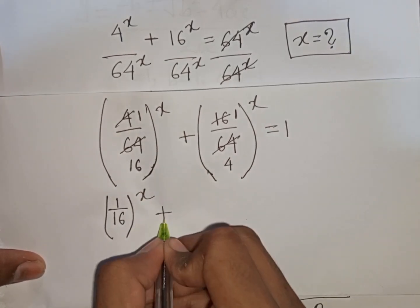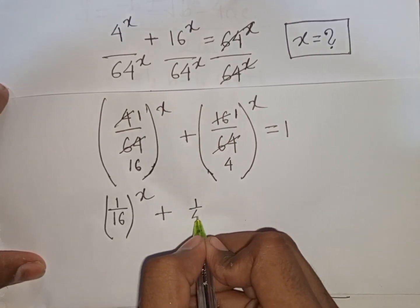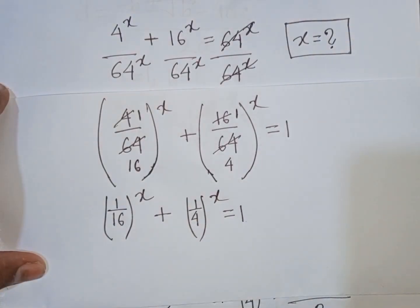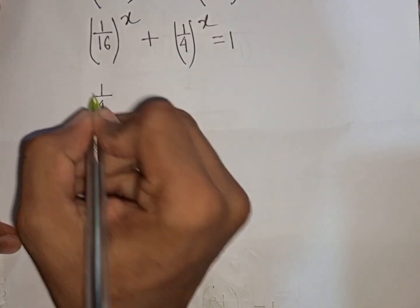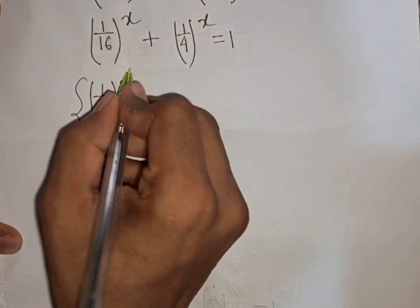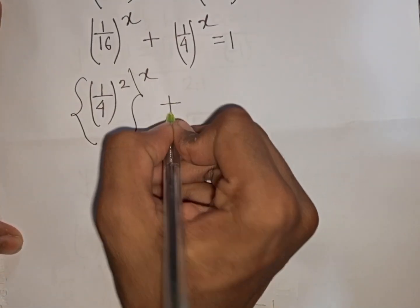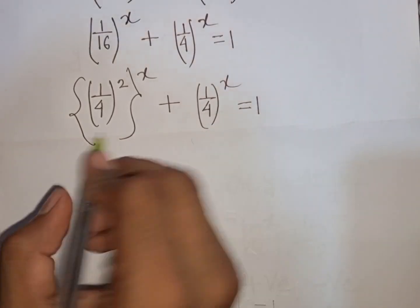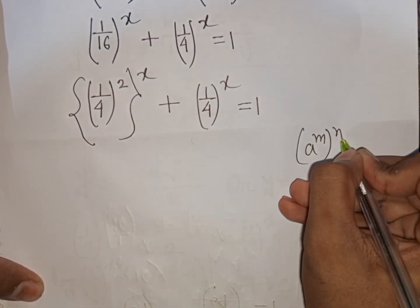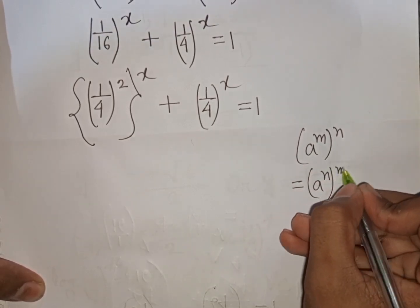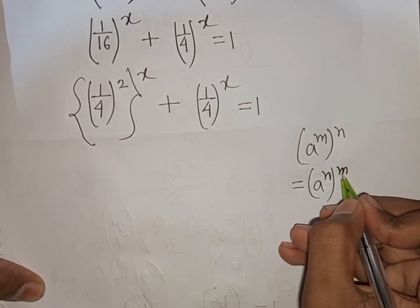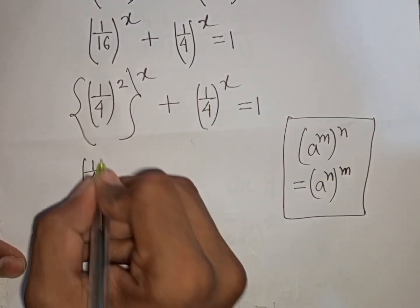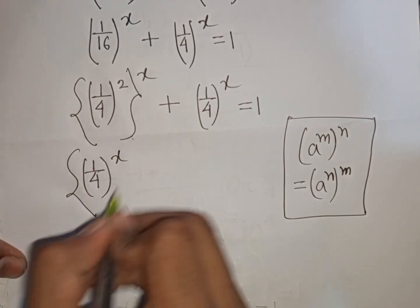Now 1/16 can be written as (1/4)^2. So the first bracket (1/16)^x can be written as (1/4)^(2x). Now I can apply the exponential rule that (a^m)^n = (a^n)^m, so (1/4)^(2·x) becomes ((1/4)^x)^2.